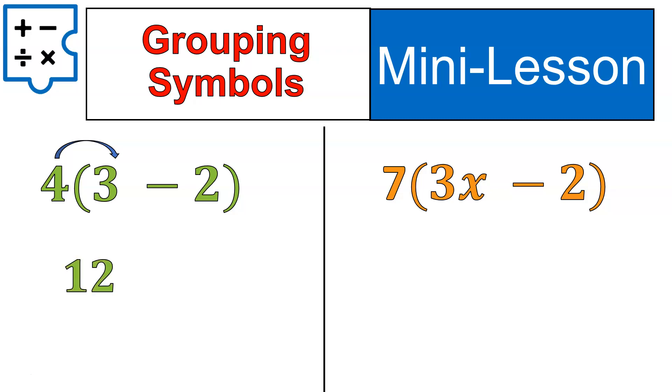4 times 3 is 12. 4 times negative 2 is negative 8. Then we join together those terms. 12 minus 8 is 4, and that's our final answer.